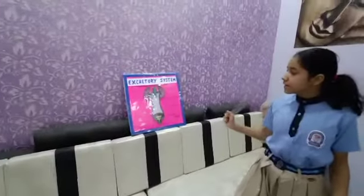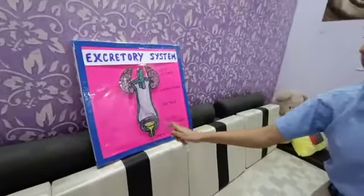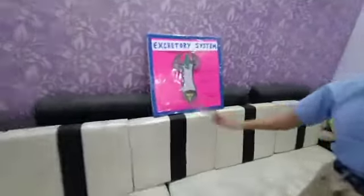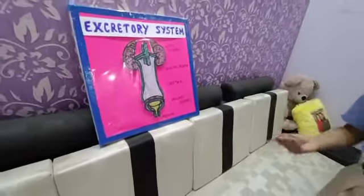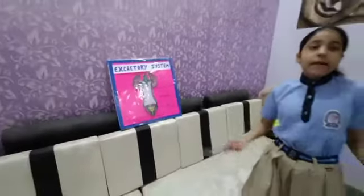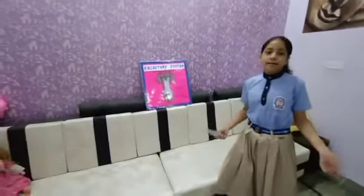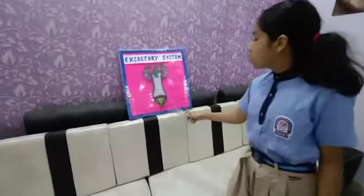Then the urine is passed through the tube-like structure called the urethra. These are the urethra, and it is stored in the urinary bladder. When the urinary bladder cannot store any more urine, it passes out through the urinary opening of the muscular tube, or urethra.